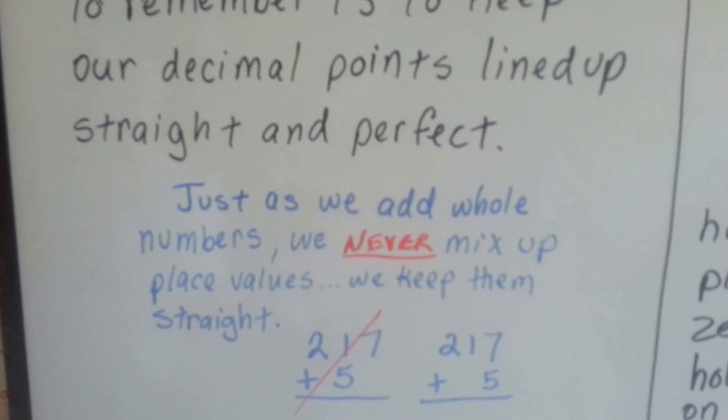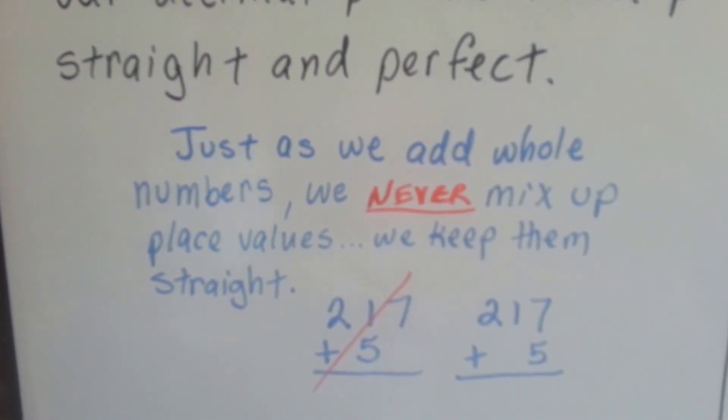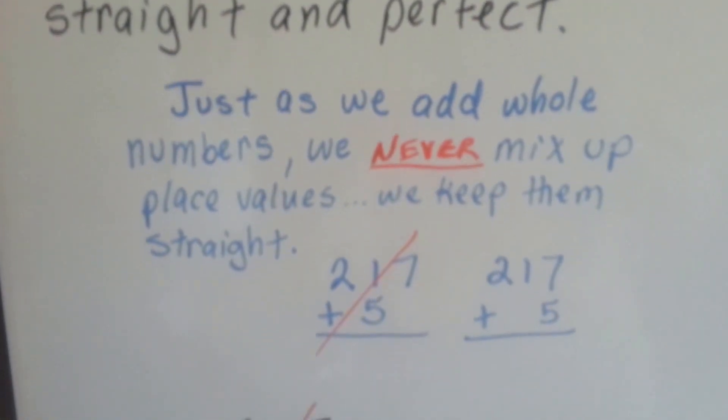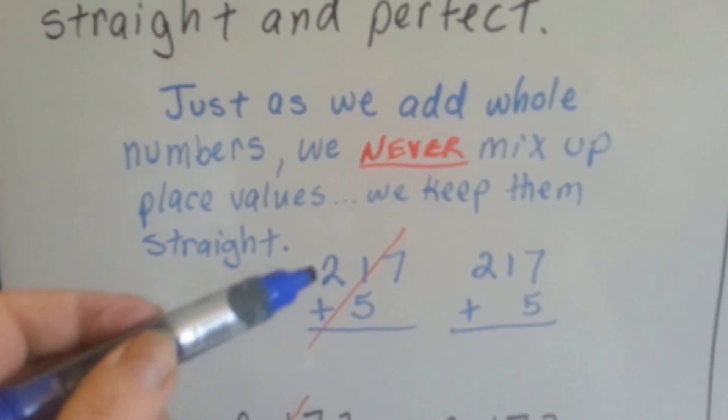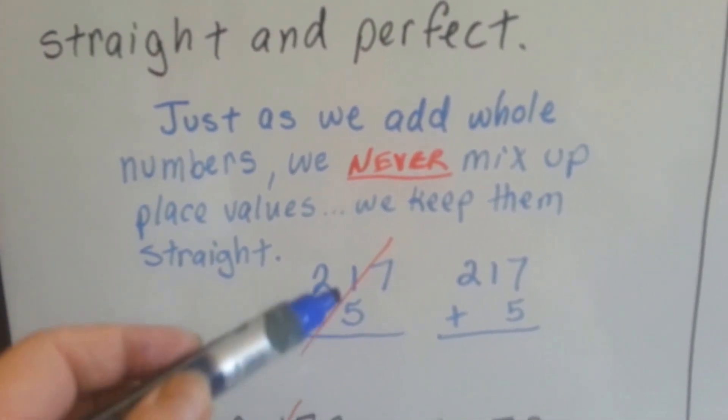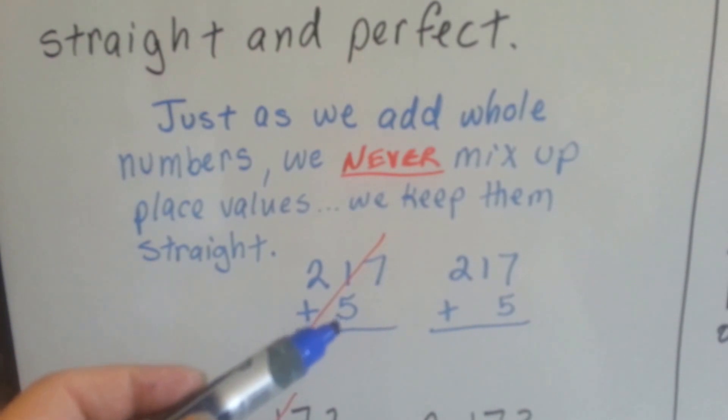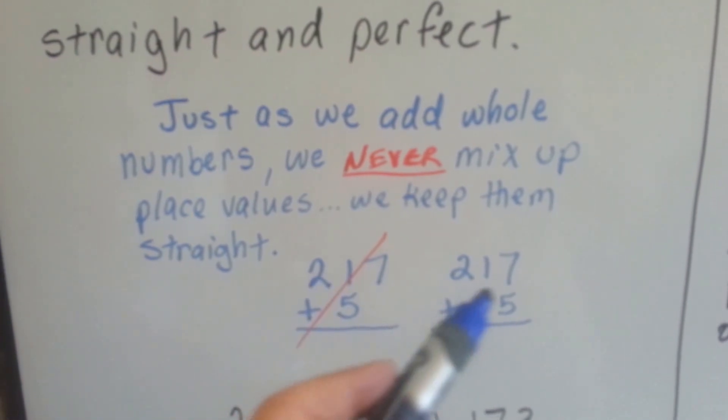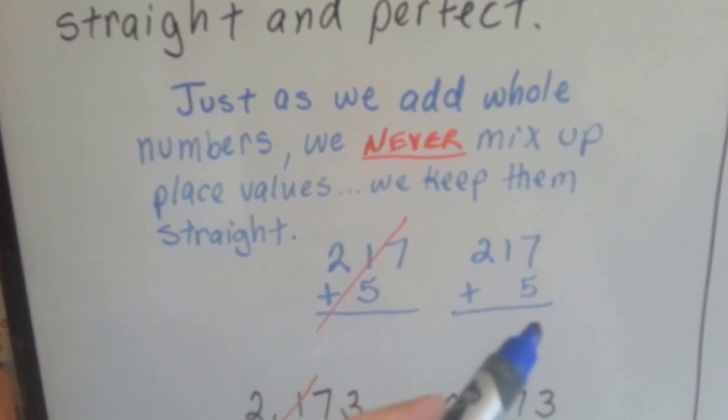Just as we add whole numbers, we never mix up the place values. We keep them straight. If we added 217 and 5, we wouldn't put the 5 in the tens place. That wouldn't be right. We would put it in the ones place where it belongs.